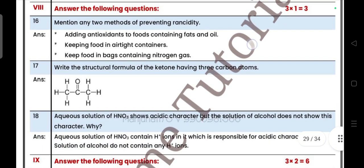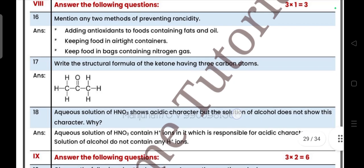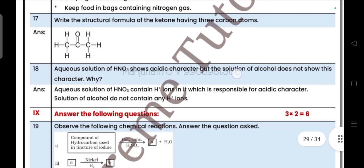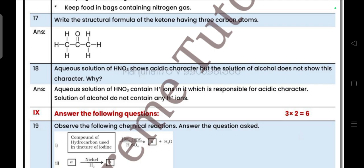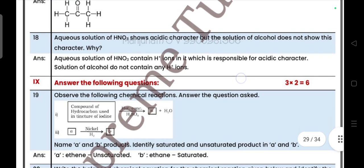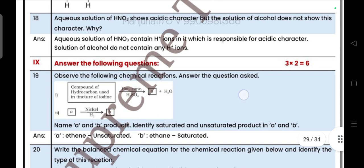Next, one more questions. Three questions, each carries one mark. Mention any two methods of preventing rancidity. Then write the structural formula for ketone having three carbon atoms. Then: A solution of HNO₃ shows acidic character but the solution of alcohol does not show acidic character. Why?